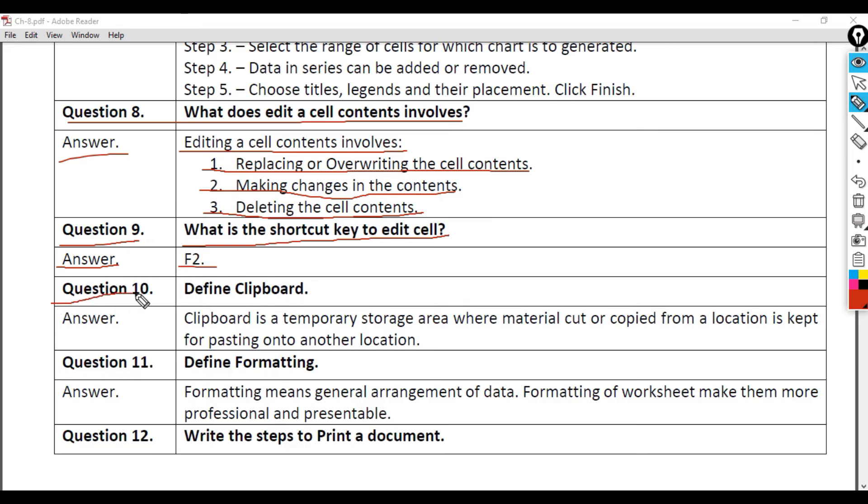Question 10: Define Clipboard. Answer: Clipboard is a temporary storage area where material cut or copied from a location is kept for pasting onto another location.